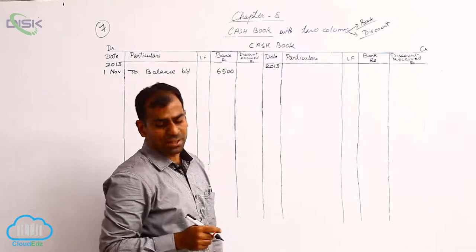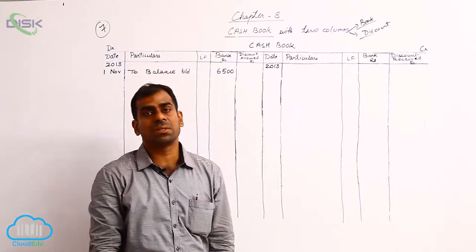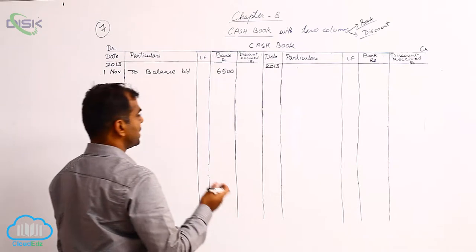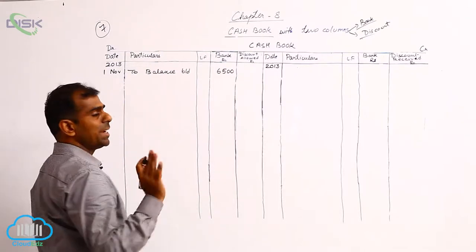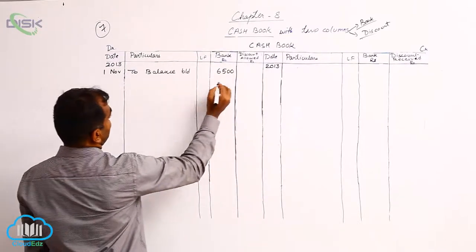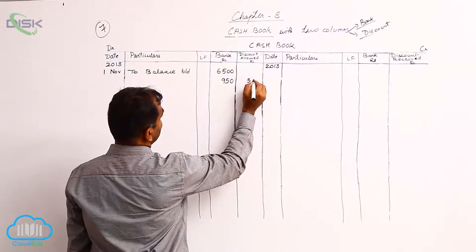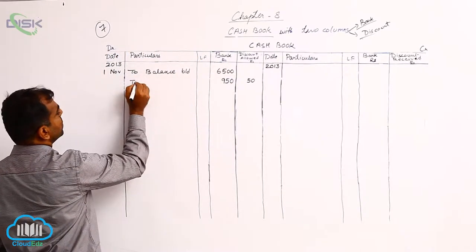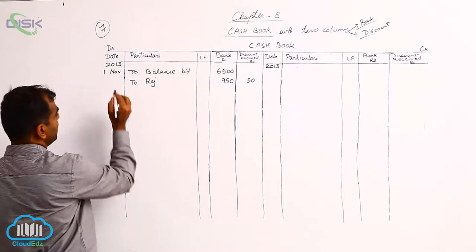The next transaction is on the 3rd: received check from Raj — 950, discount allowed 50. Since we received a check, cash is coming in indirectly, so we record it on the debit side. The bank column gets 950, and 50 rupees in the discount allowed column since we are not getting that amount. The particulars column shows Raj, date being the 3rd.